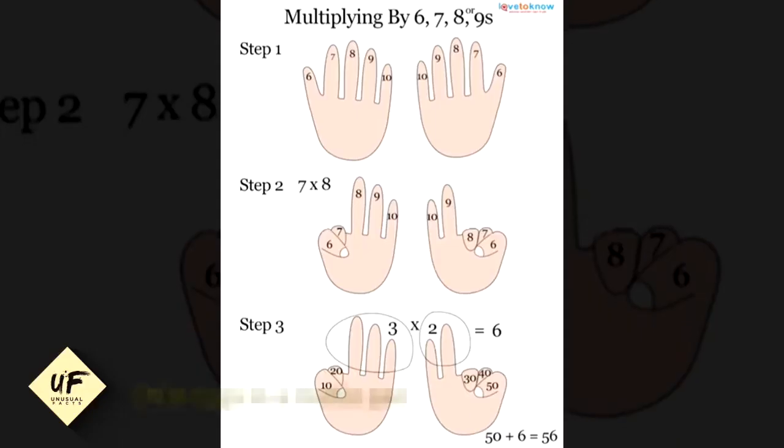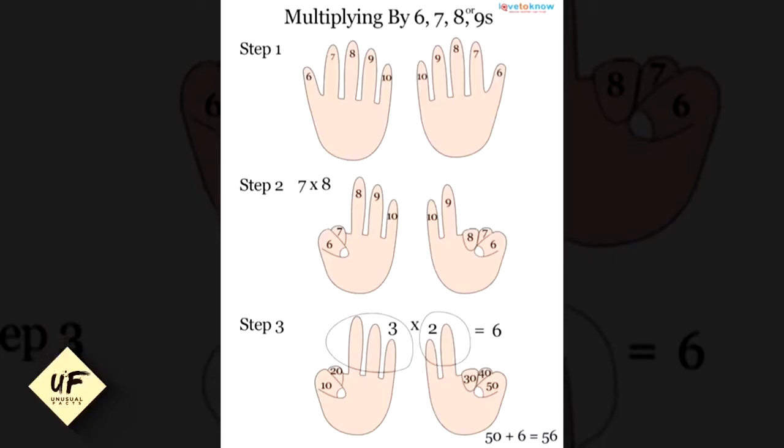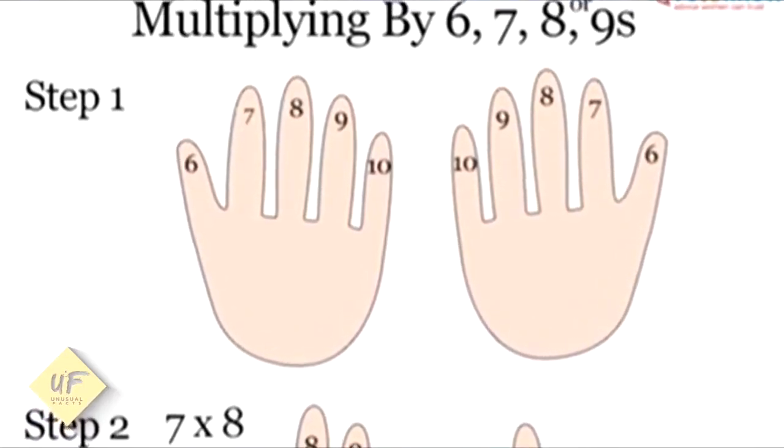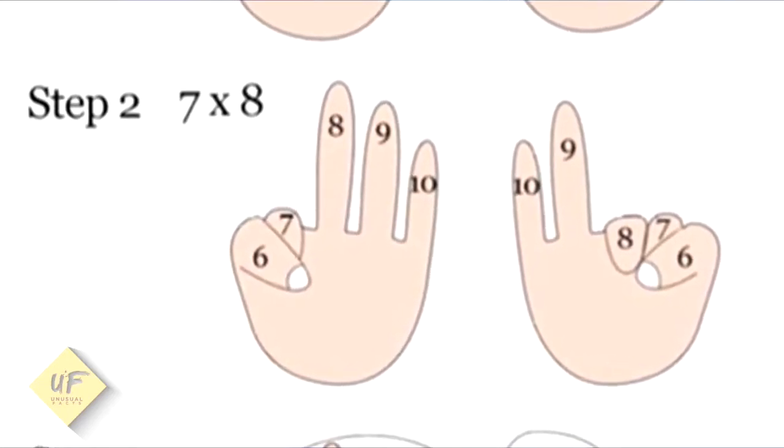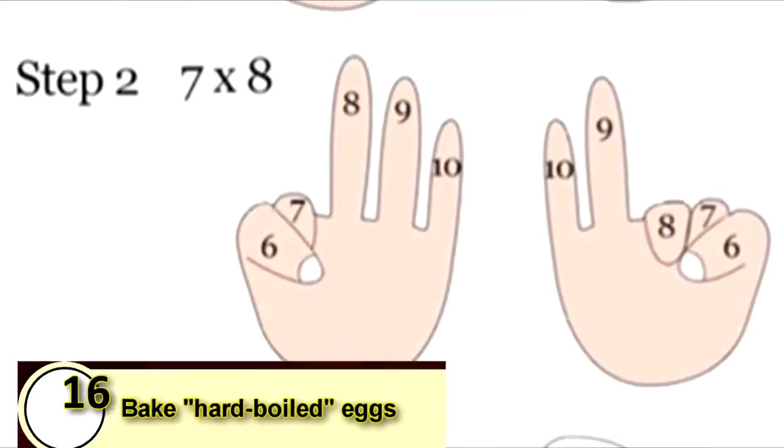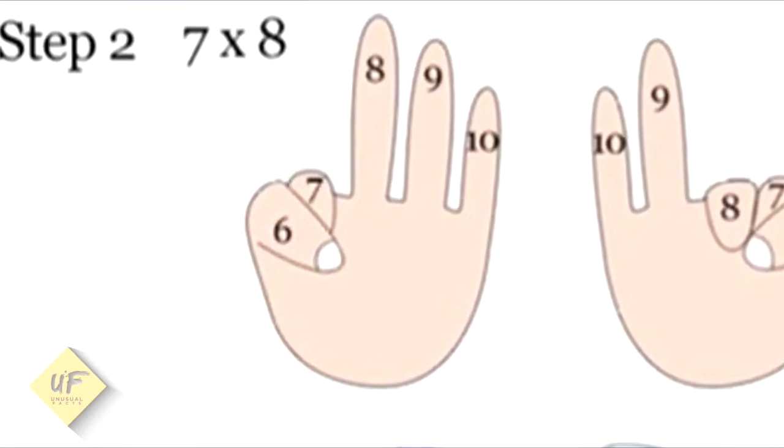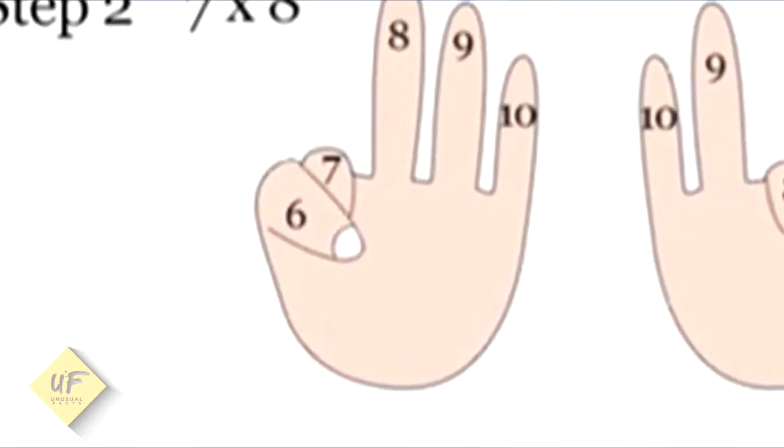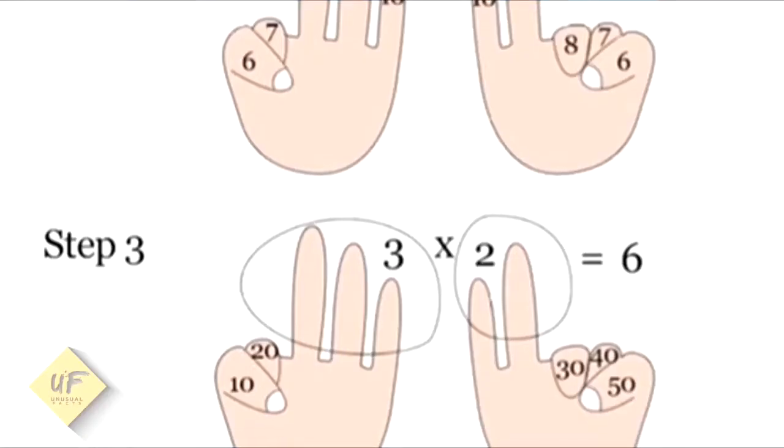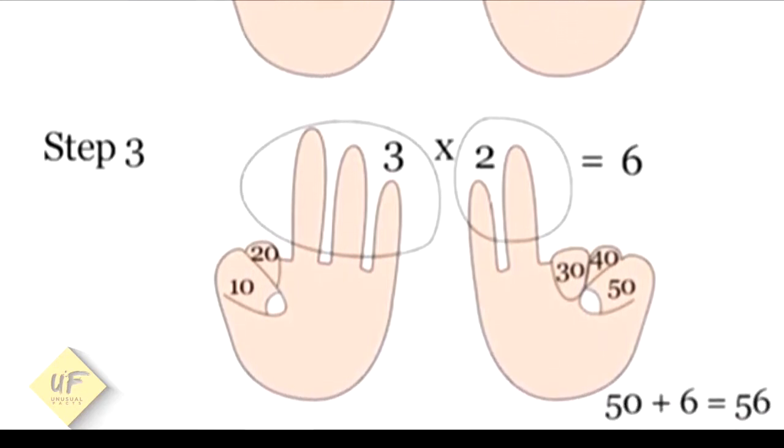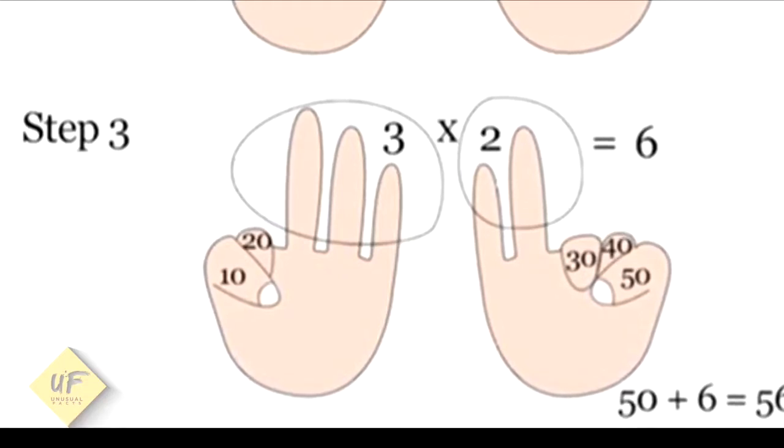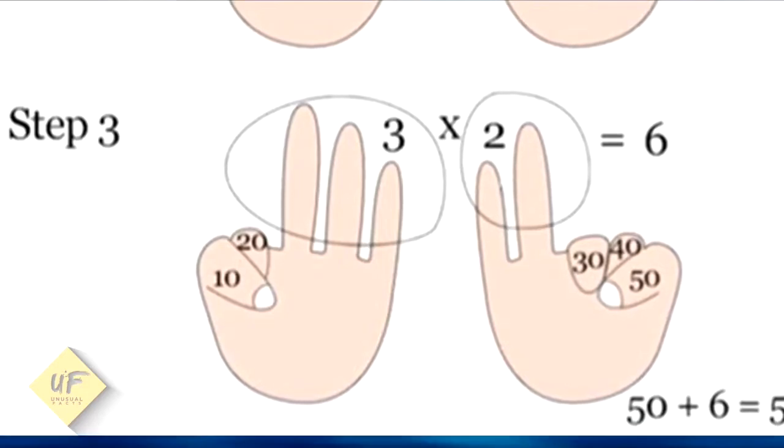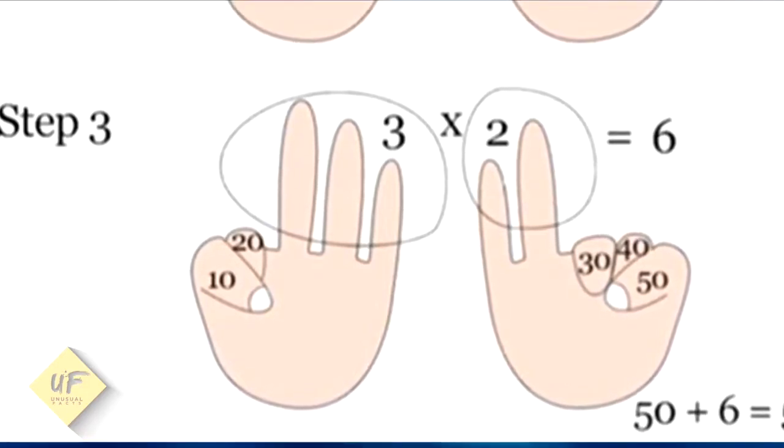Number six: multiplying by six, seven, eight, or nine. Here's a trick we're all gonna want to remember. Step one: label your fingers starting with the thumb at number six and the pinky at number ten. Step two: seven times eight. On one hand, you put down fingers six and seven, leaving eight, nine, ten up. On the other hand, you put down six, seven, and eight. Now each finger put down becomes 10, 20, 30, 40, or 50. The fingers that are left—three and two—get multiplied together, which equals six. So 50 plus six is 56. Seven times eight is 56.